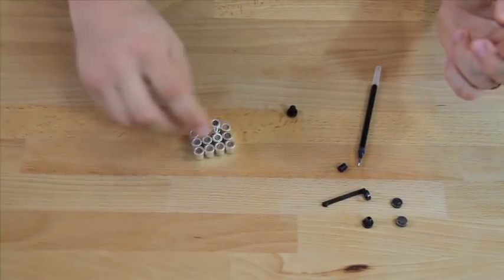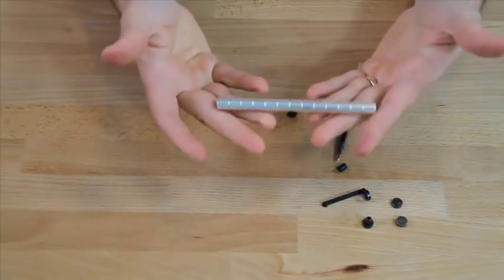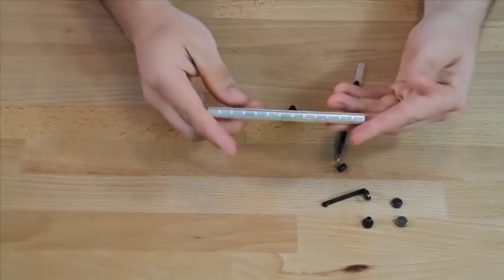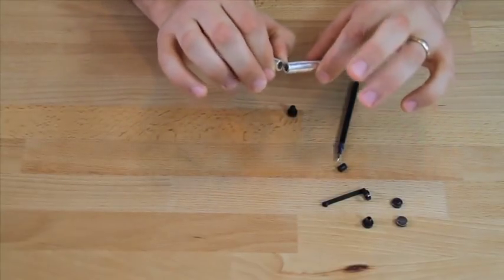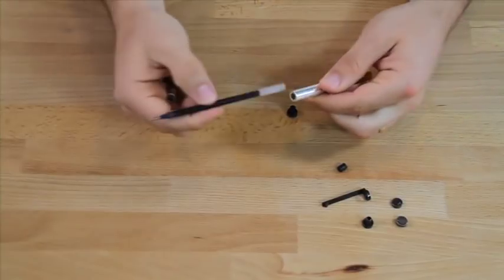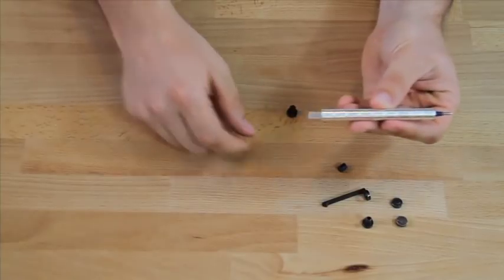To put the magnets together all you have to do is kind of put them in your hands and they'll assemble themselves essentially. I like to break off four magnets to start. I slide the cartridge into the pen like that.